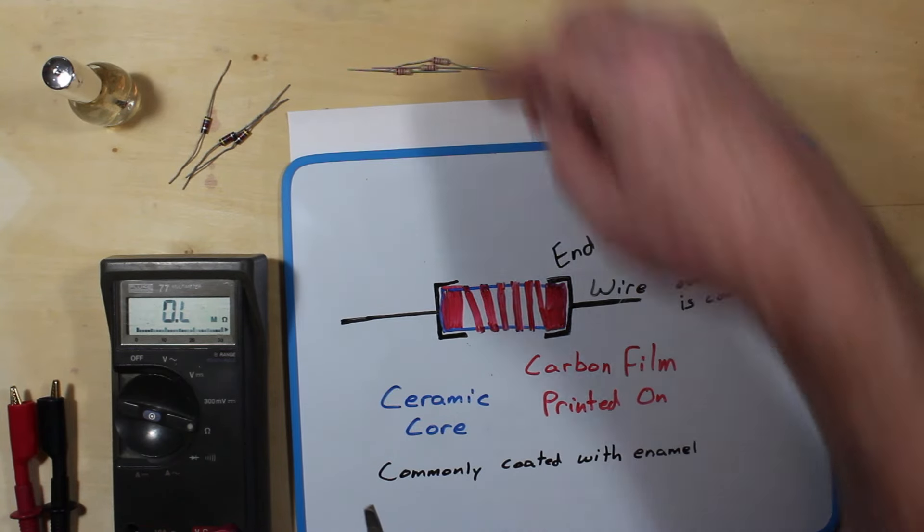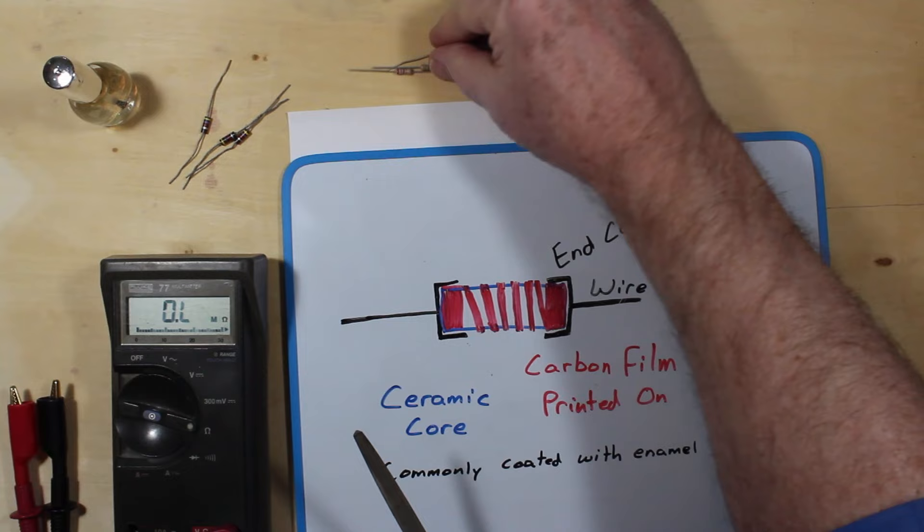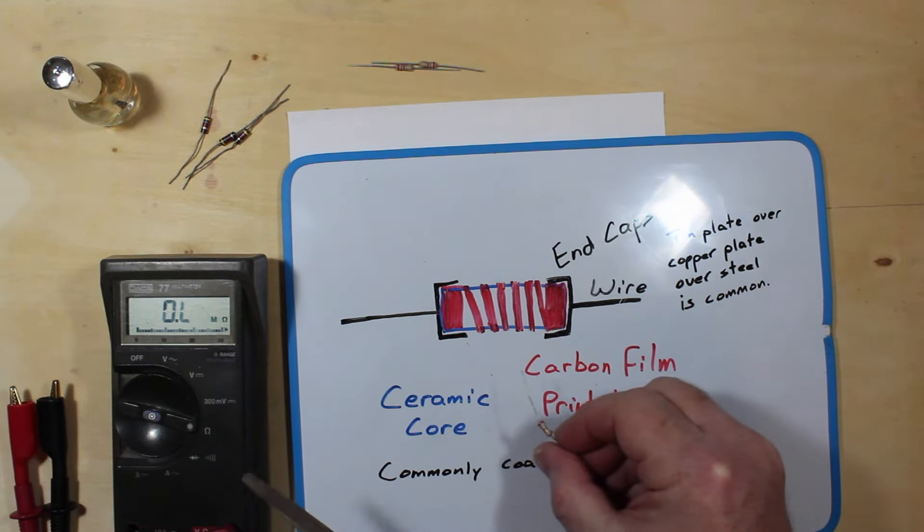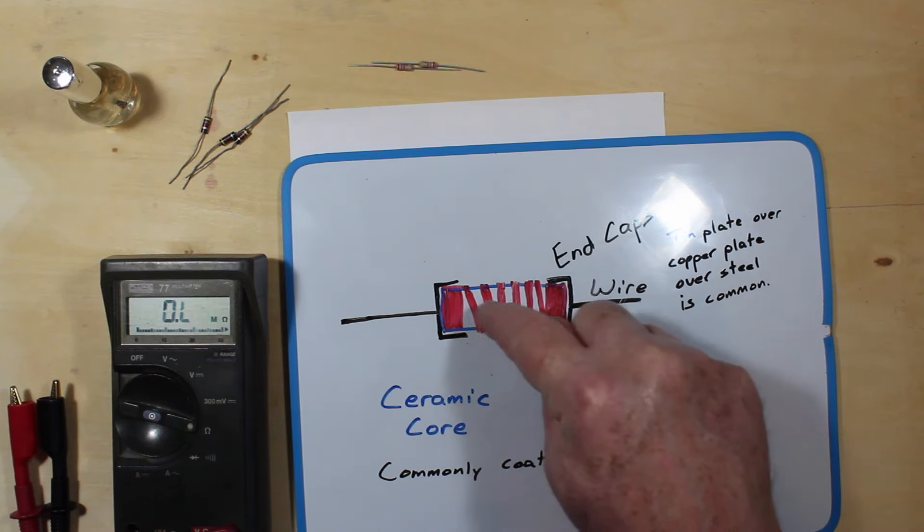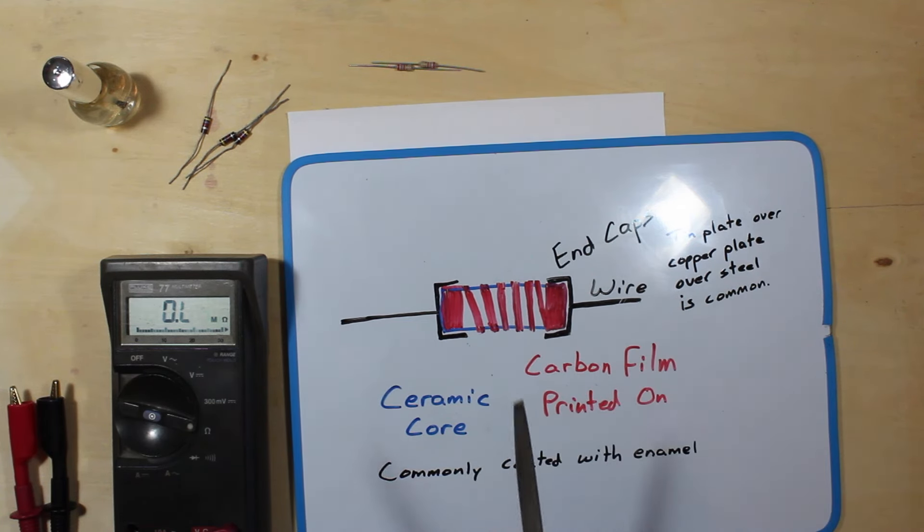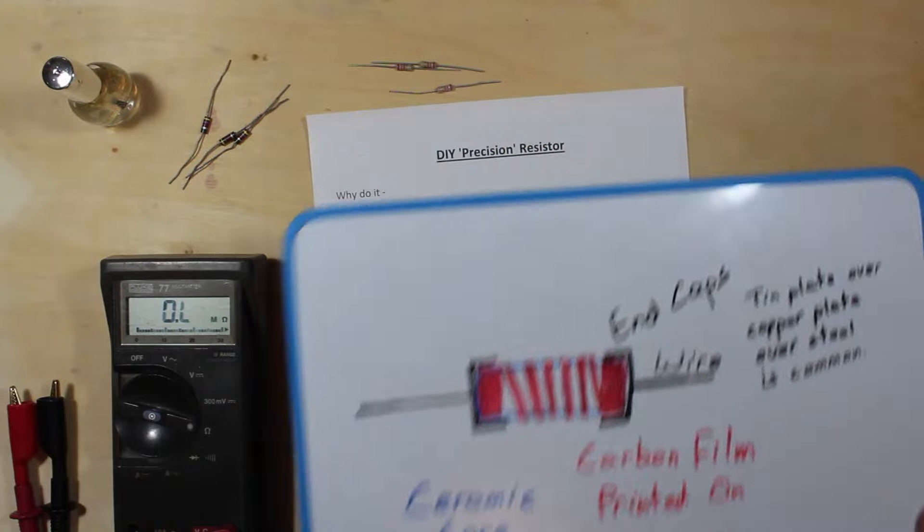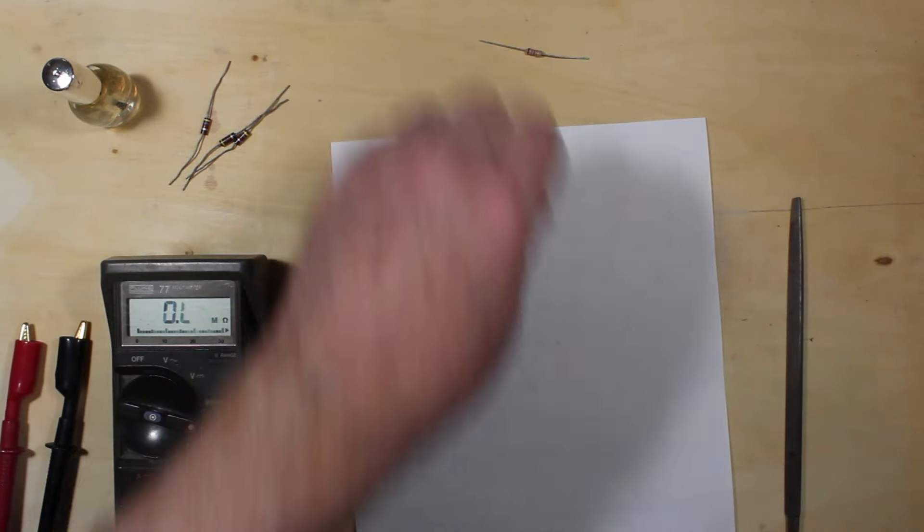These carbon film ones, you'll be going through the surface of them, the epoxy or the enamel on the outside of these and then you'll get down to this carbon film right here and you've got to be very ginger, very careful with it, do it very gingerly and I'll show you how it's done.